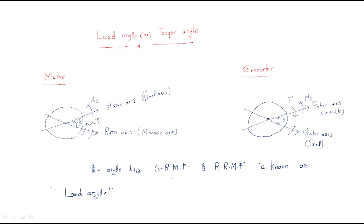The rotating magnetic field produced by the stator is known as the stator RMF. The rotor RMF is nothing but the rotating magnetic field of the rotor. These two have some angle between them, which is known as the load angle or torque angle. The relation between the stator RMF and rotor RMF will produce the torque — that is why it is called the torque angle.